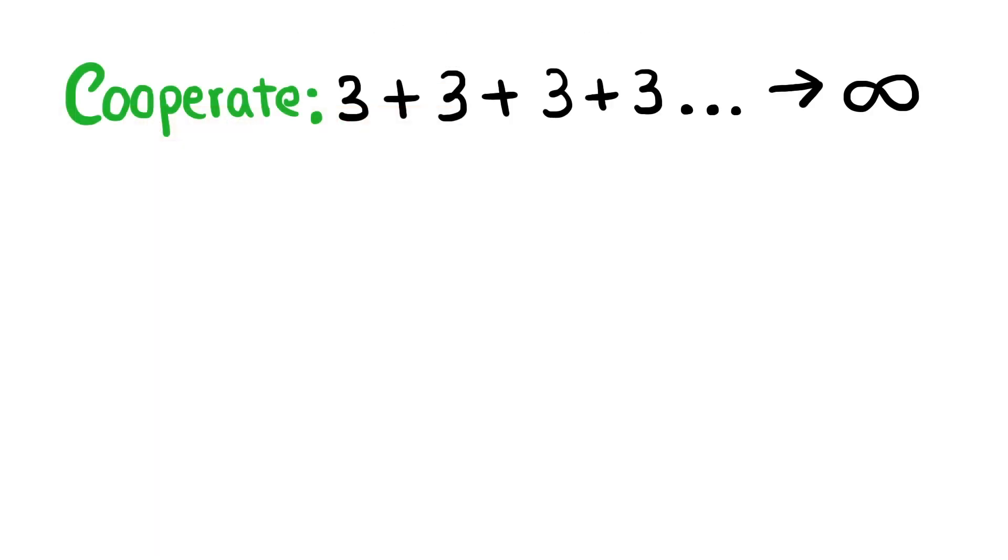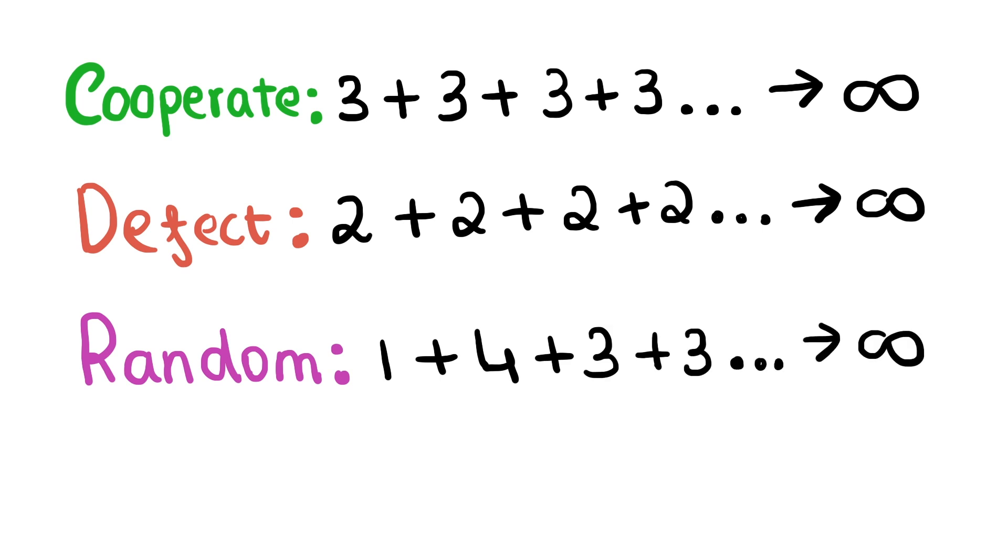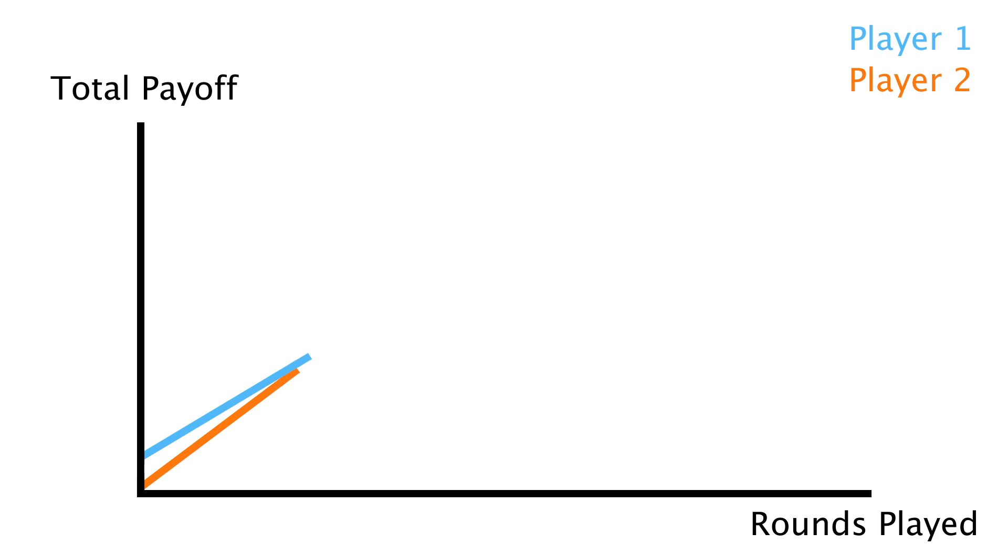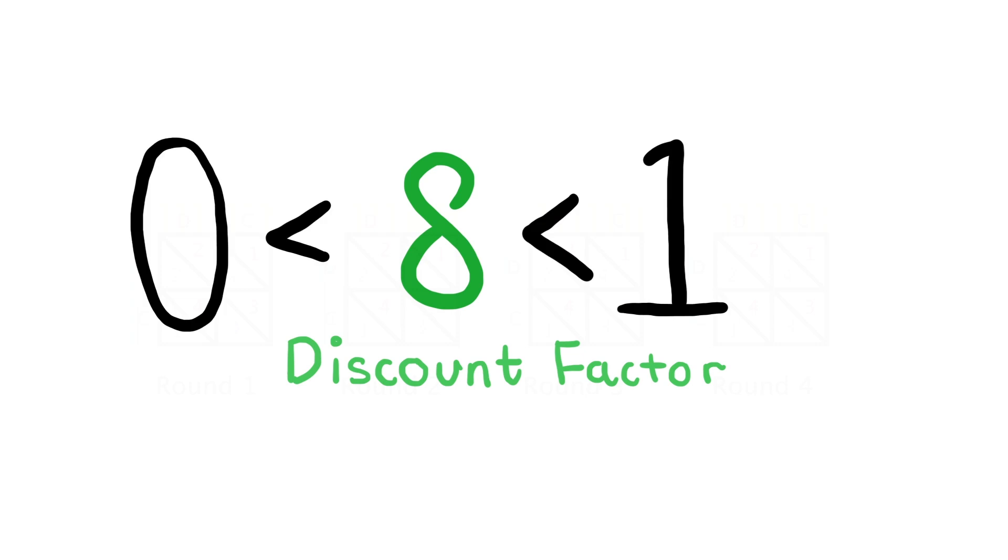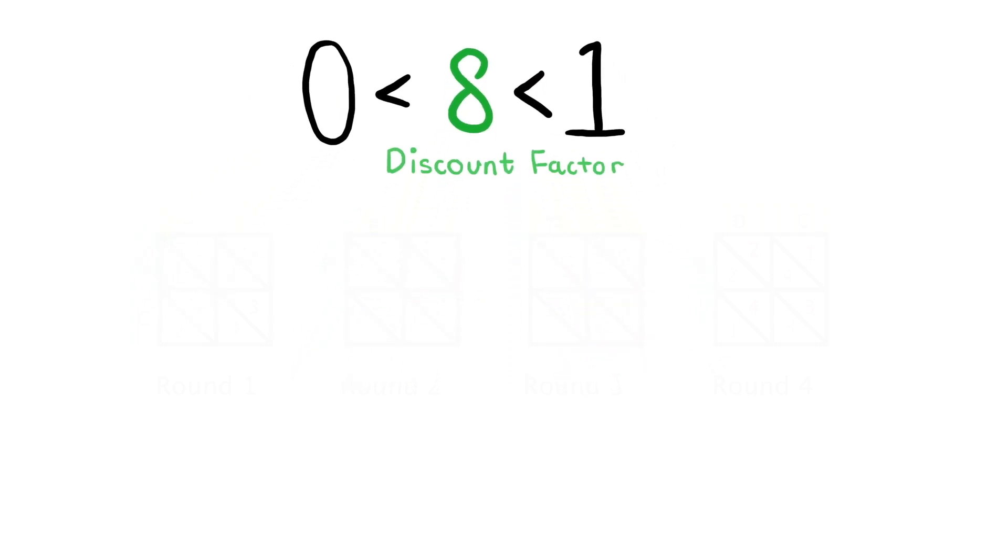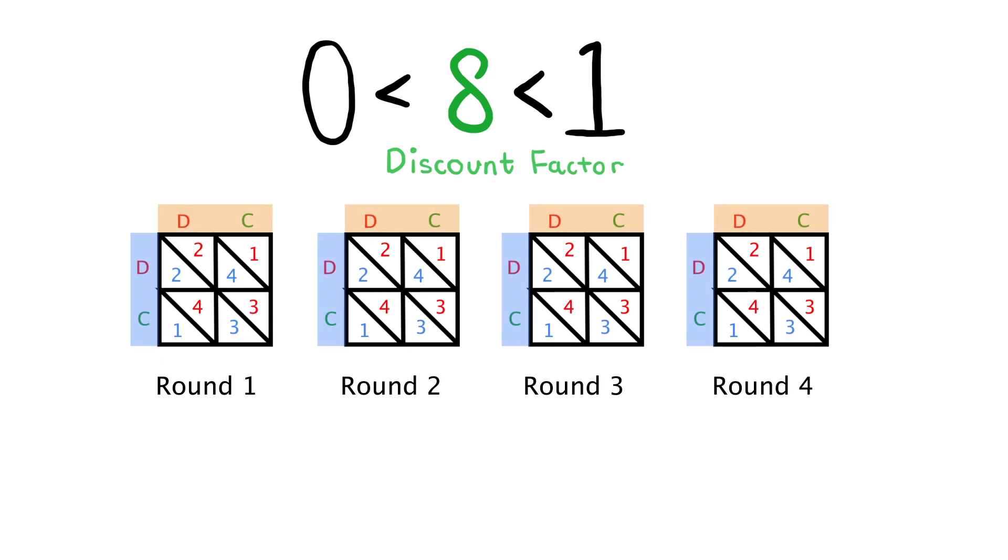So, whether they cooperate or defect or do anything, they are still getting an infinite payoff. In order to prevent the game from breaking down, we need to make the players accountable for future decisions by limiting their maximum payoff. This can be done through the use of a discount factor, delta, which takes values between 0 and 1. After each subsequent round, this discount factor is raised to a higher power and multiplied to the payoff u sub n of that round.